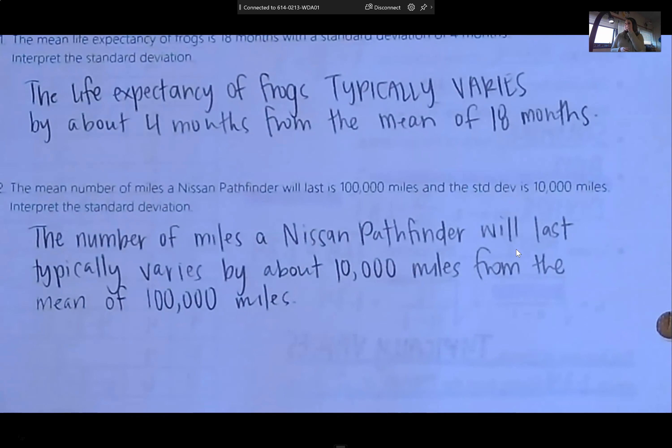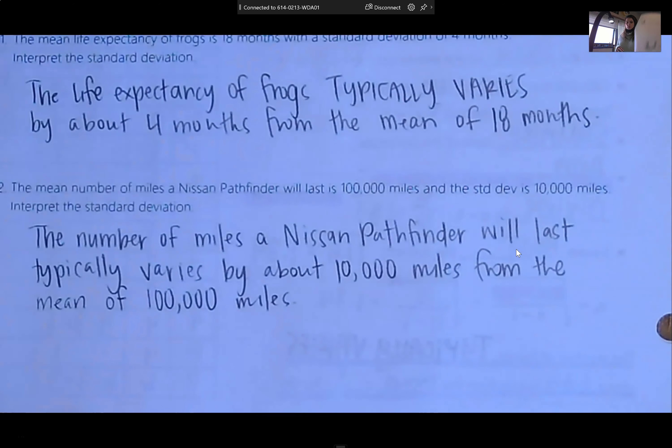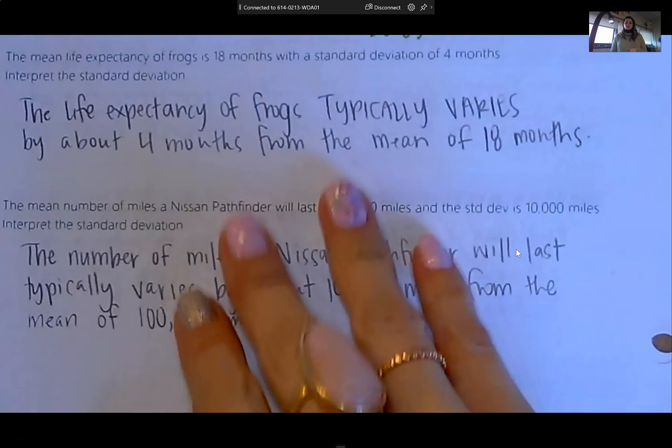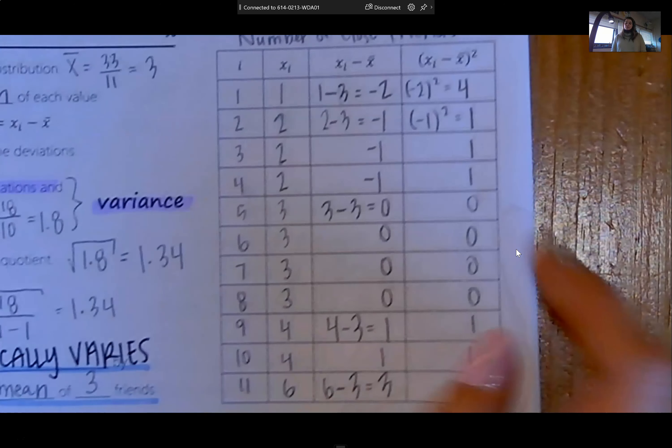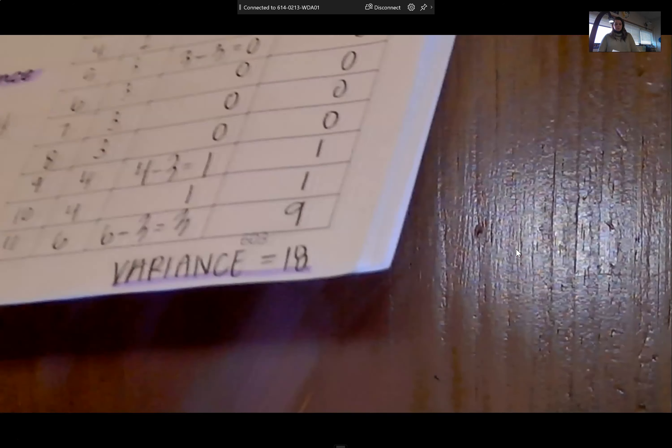So, biggest takeaway is make sure that you're using typically varies and you're including units. The number of miles a Nissan Pathfinder will last typically varies by about 10,000 miles from the mean of 100,000 miles. So, the check for understanding, what they're really gonna try to highlight for you guys is that standard deviation is not resistant. Outliers do affect standard deviation and how do you interpret standard deviation. If I had to condense this down, that's what this entire lesson is on. If you struggle on doing this by hand, don't worry. The chances you're gonna have to do that on a test are so slim.